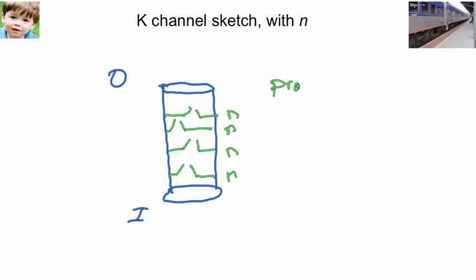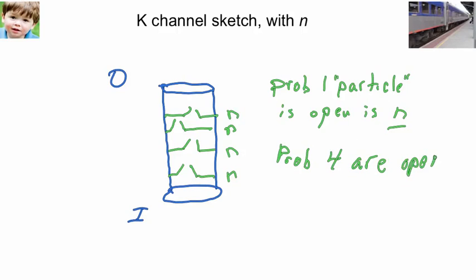And what we're saying is, we're saying there are four gates an ion has to pass through to get through the channel. The probability that one particle, as Hodgkin and Huxley called it, the probability that one of these gates, one particle is open, is n.